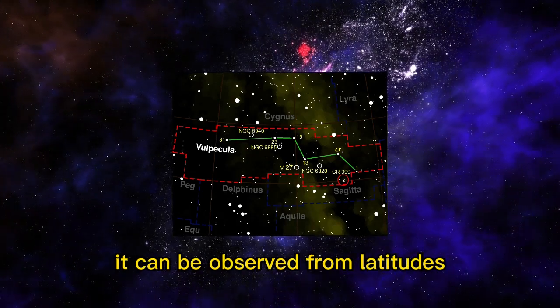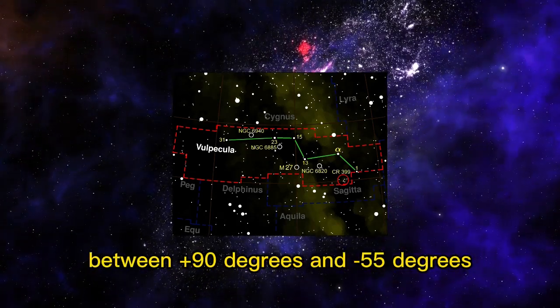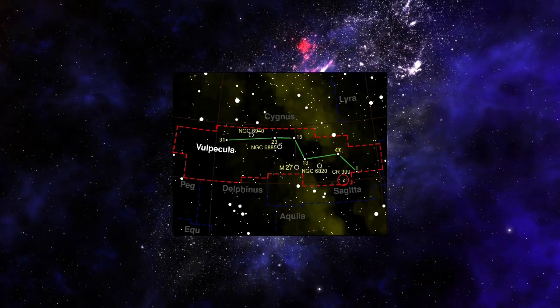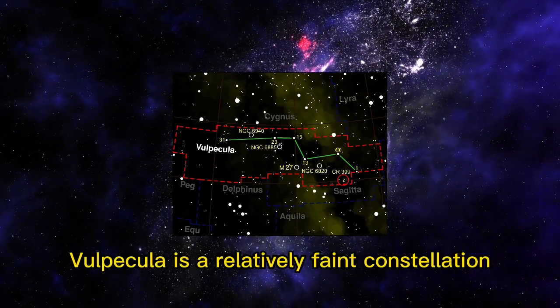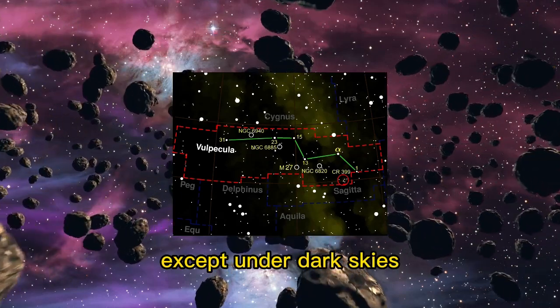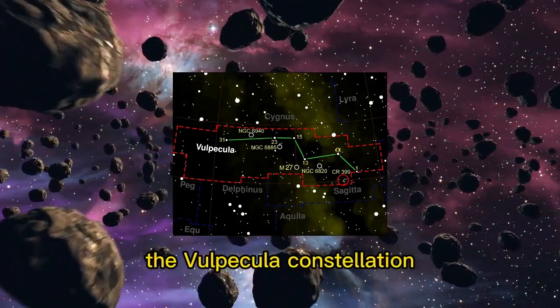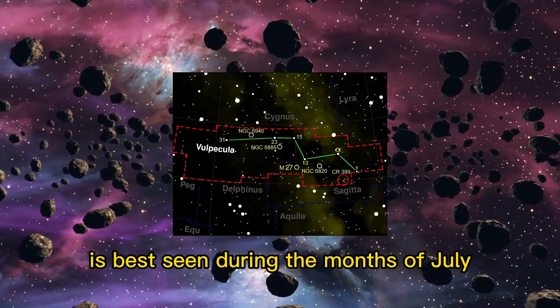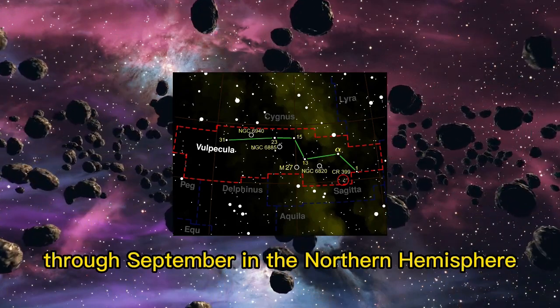It can be observed from latitudes between +90° and -55°. Vulpecula is a relatively faint constellation and is not easily visible to the naked eye, except under dark skies. The constellation is best seen during July through September in the northern hemisphere.